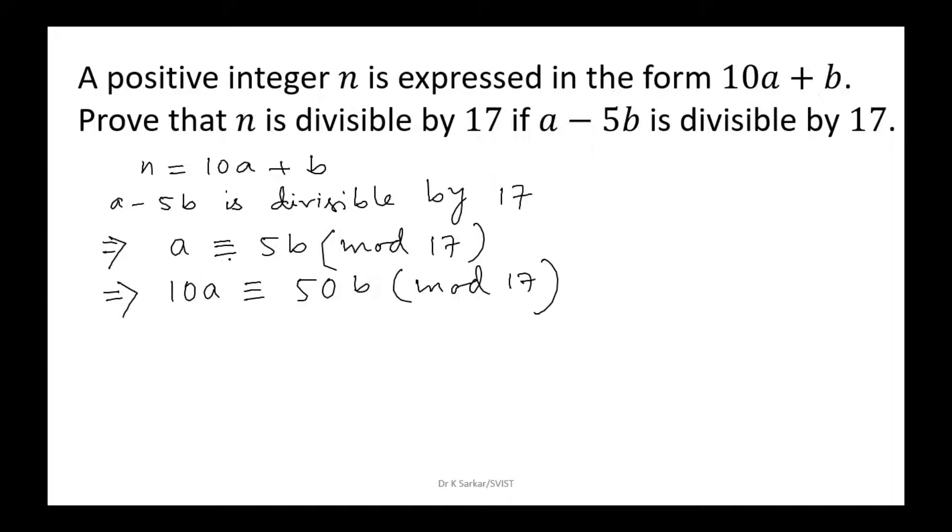This is the congruence property. We are multiplying both sides by 10 because here 10 is there.